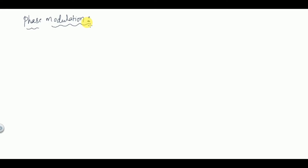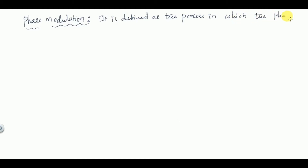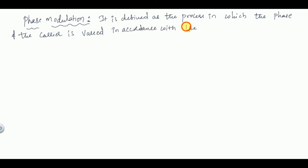Phase modulation is defined as the process in which the phase of the carrier is varied in accordance with the amplitude of the message signal.